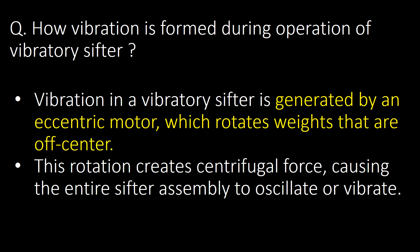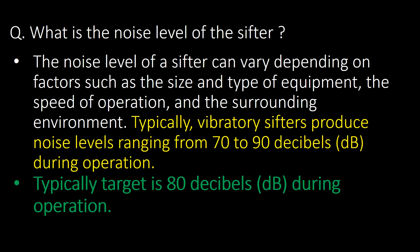What is the noise level of the shifter? The noise level of a shifter can vary depending on factors such as the size and type of equipment, the speed of operation, and the surrounding environment. Typically, vibratory shifters produce noise levels ranging from 70 to 90 decibels during operation, with a typical target of 80 decibels.